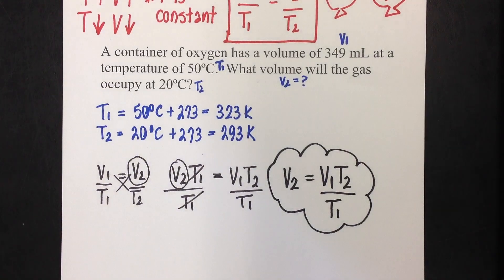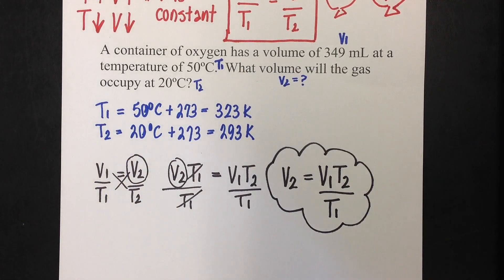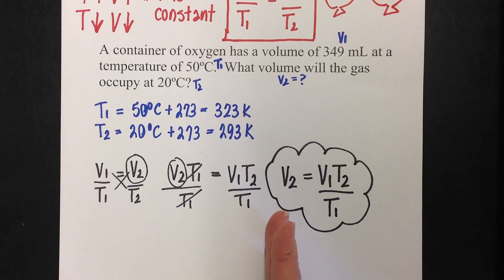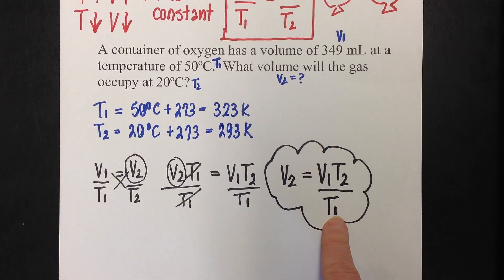Now, for some of you who are very mathematically inclined, that probably looks like a whole lot of extra work. Because some of you could have just plugged right into this, moved everything around, and solved for V2. But, I'll say this again. I really like getting everything rearranged with my unknown on the left, what I'm plugging into on the right, because now everything's set up.